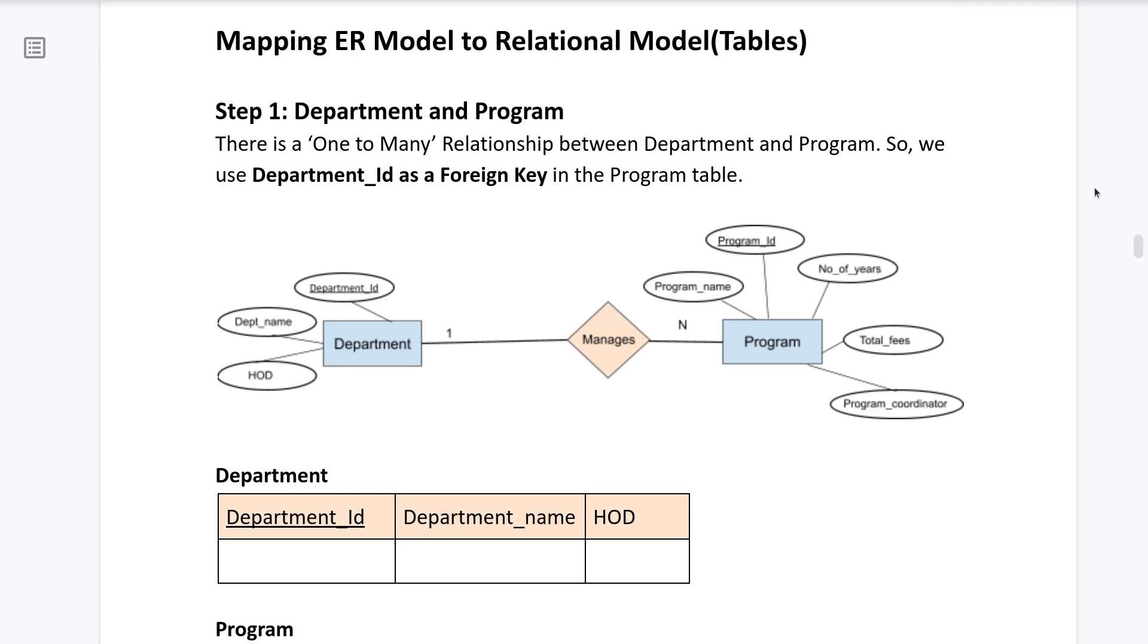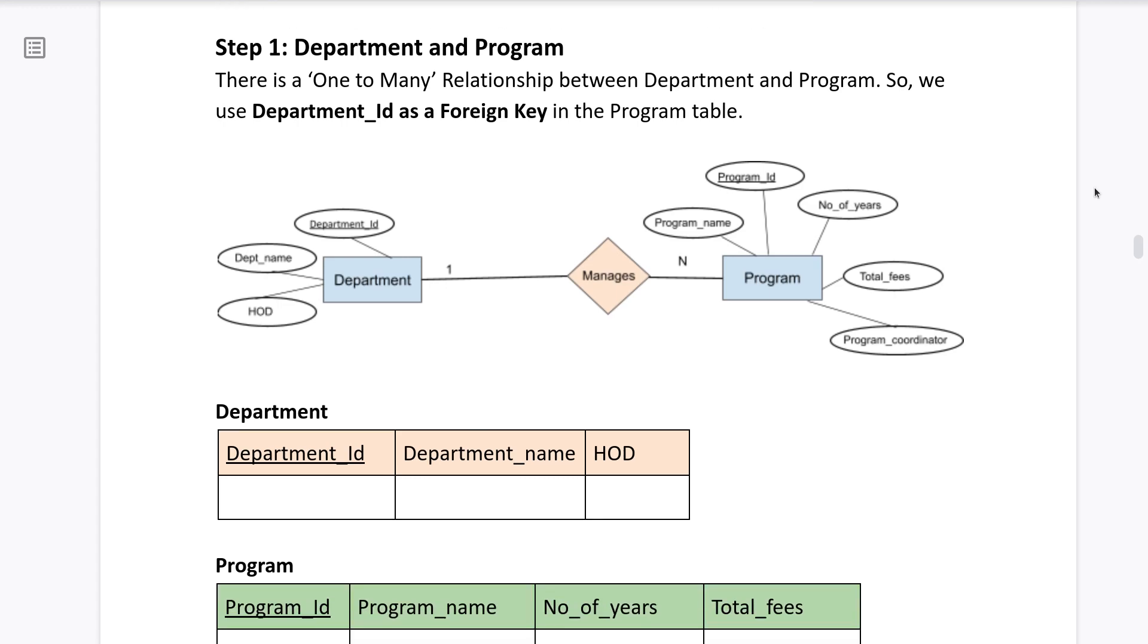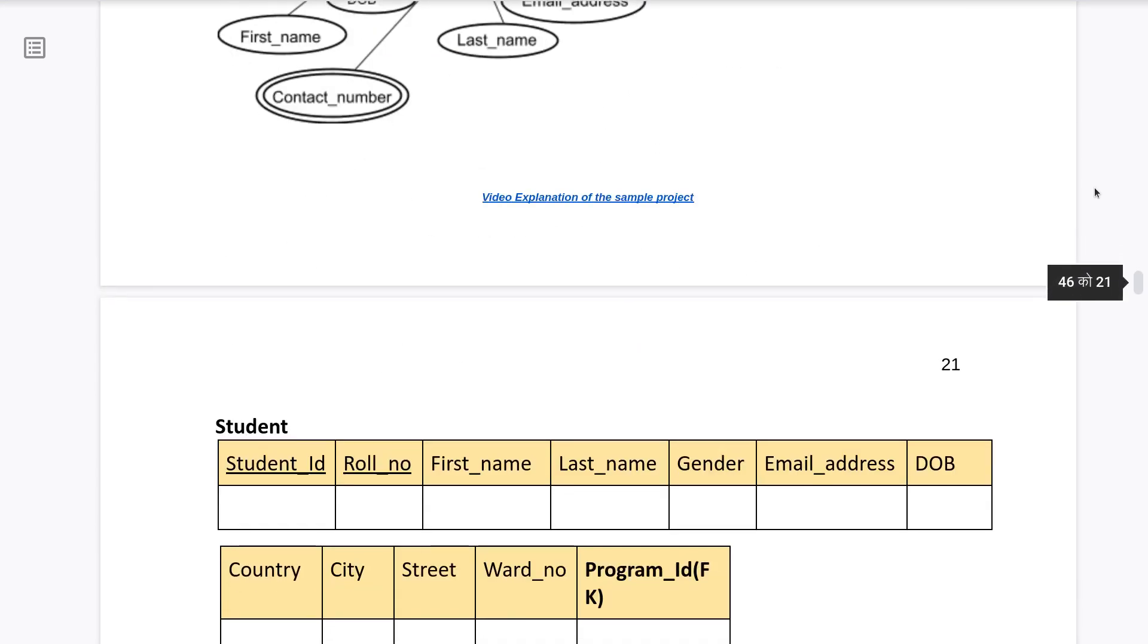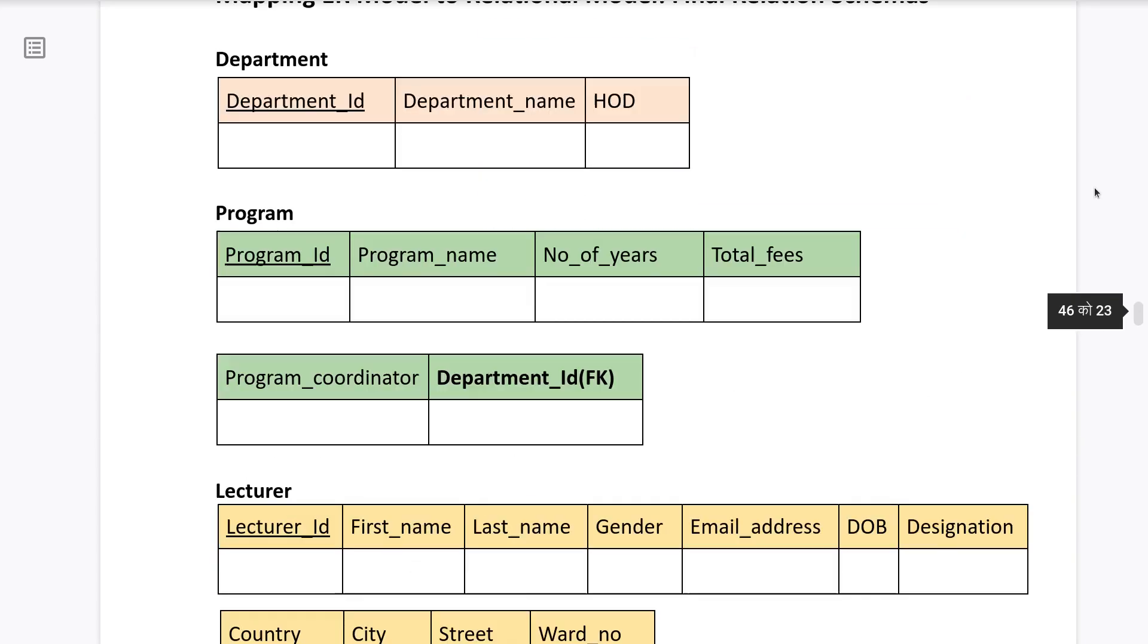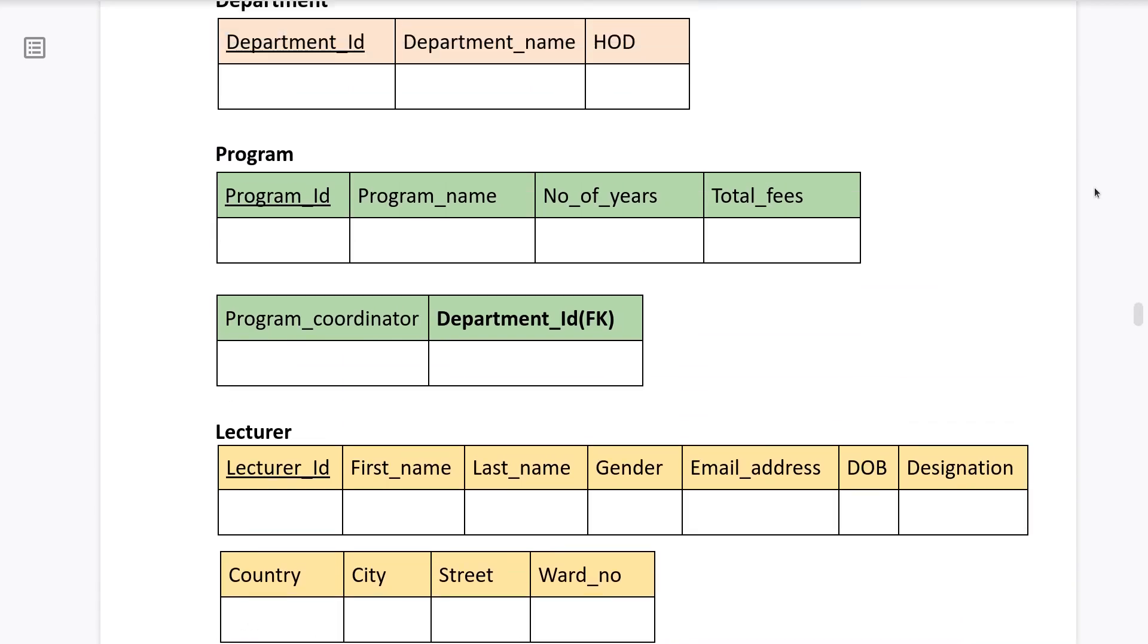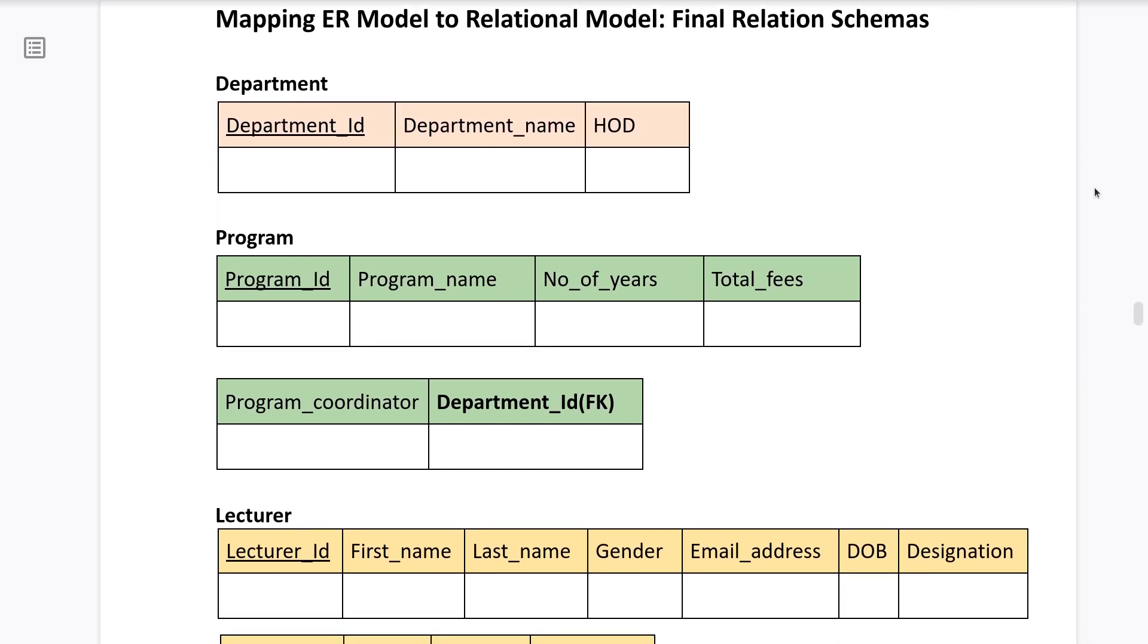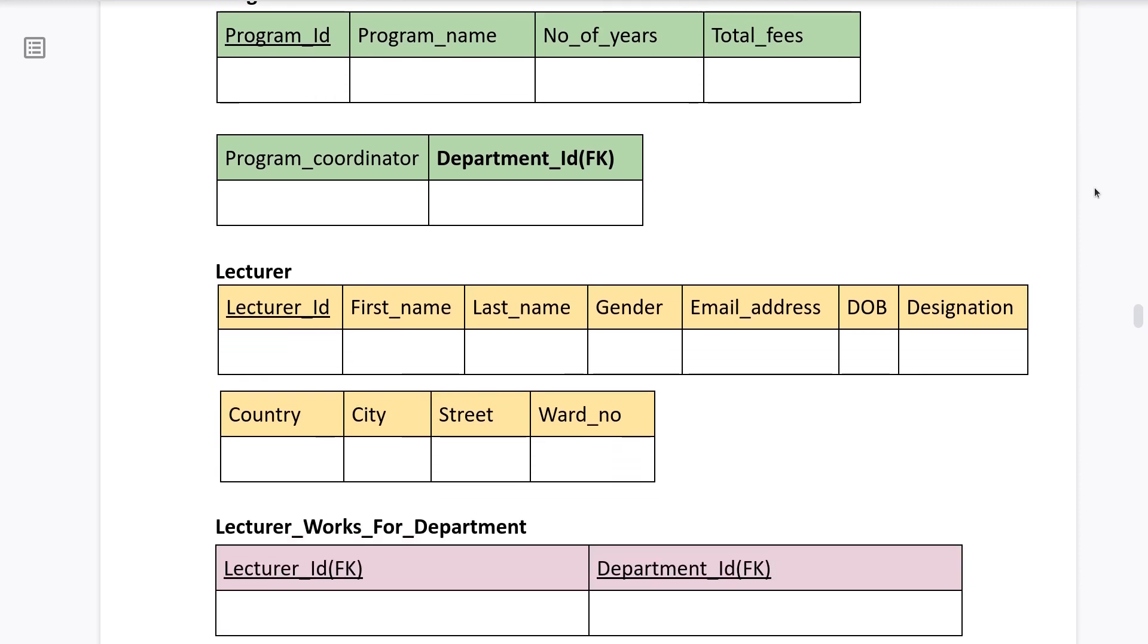ER model to relational model. For this one also I have done it step by step by taking a small portion of the ER diagram and then converting into the relation. But you don't have to do it like this. You can directly draw the final tables, the ones listed here. These are the final schemas, relation schemas. After ER diagram you can write down these schemas.